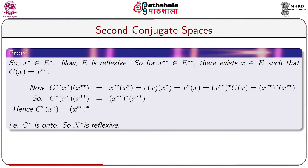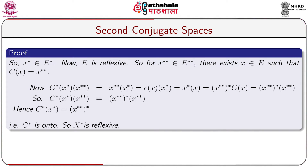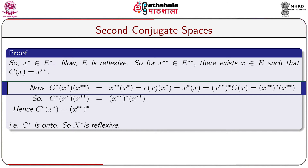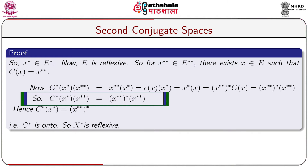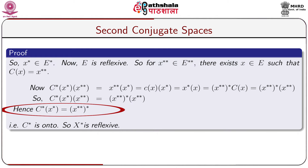Now E is reflexive, so for x** belonging to E** there exists x belonging to E such that C(x) = x**. Now C*(x*)(x**) = x**(x*) = C(x)(x*) = x*(x) = (x**)*(C(x)) = (x**)*( x**). So C*(x*) acting on x** equals (x**)*(x**). Hence C*(x*) = (x*)**. That means C* is onto, so E* is reflexive.